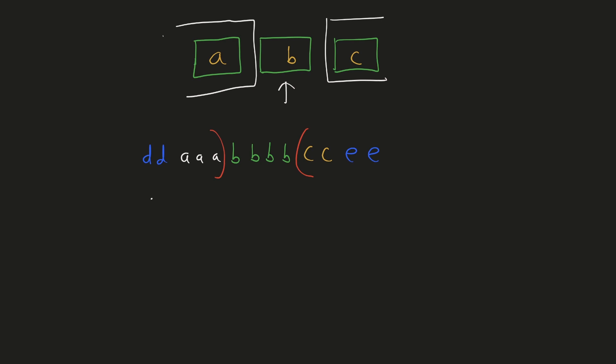All the numbers to the left of B can be considered as 'left' and all the numbers to the right can be considered as 'right'. The number of triplets with B as the middle element would be left × mid × right. This part is a little tricky to understand, but once it is understood, coming up with the solution is not that difficult. If required, you can verify this with certain examples.